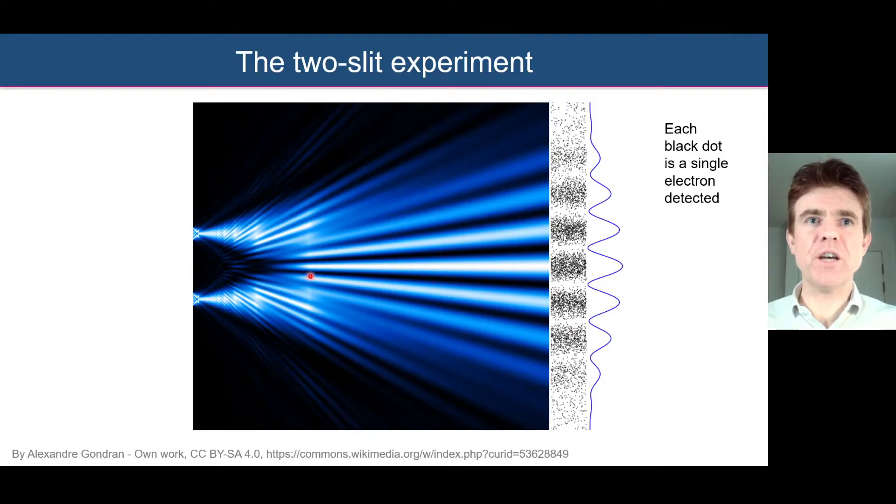Here is another look at that. This is a representation of the intensity of those waveforms as we get this interference pattern forming. What we observe is detection by detection, we get these electron clusters being detected on the right-hand side, each black dot here being a single detected electron.